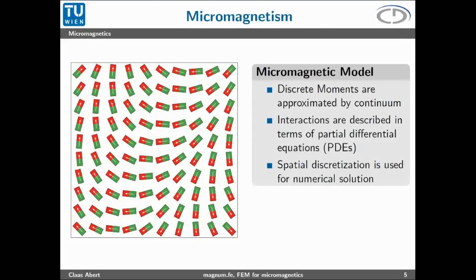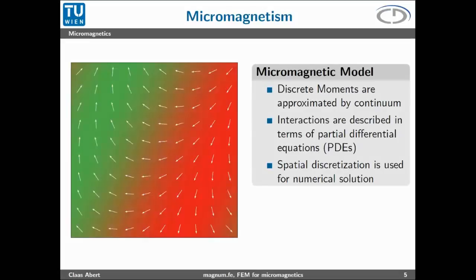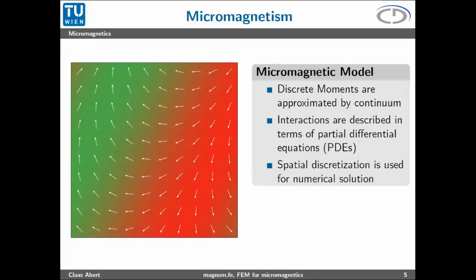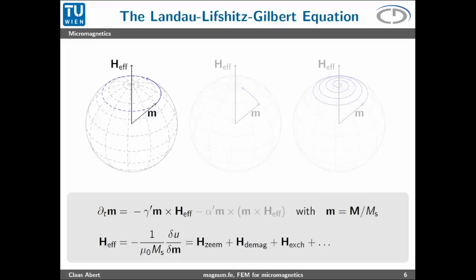What makes this problem interesting from a computational point of view is that we have these two competing contributions. One is very local, the exchange field, trying to align every magnet in parallel. The other is a global contribution which competes with the exchange field in trying to demagnetize the whole sample. When we look at a macroscopic sample with over 10 to the power of 23 magnets, we run into problems. The micromagnetic model takes this discrete description and turns it into a continuous description. We formulate field contributions in terms of PDEs and use spatial discretization.